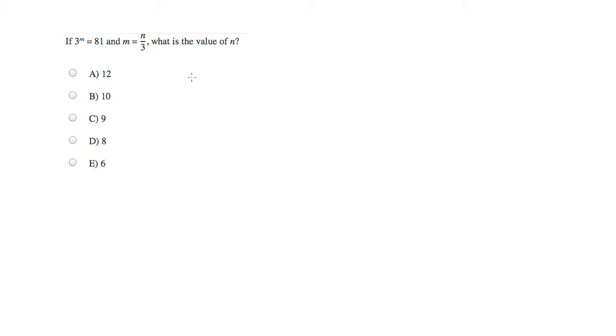To start out, first recognize the format of this problem, which is you're given some information and then you're asked to find something. In this case, we're being asked to find the value of n. Let's take a look at what we're given. We're given 3 to the m equals 81, and we're told that m is equal to n over 3.